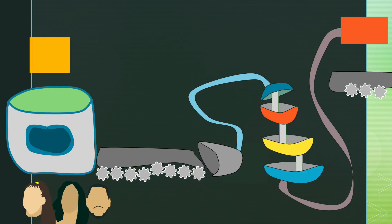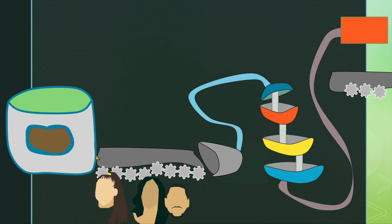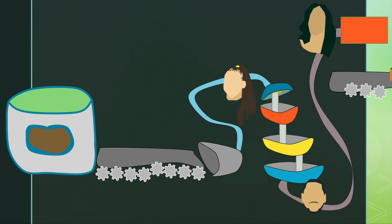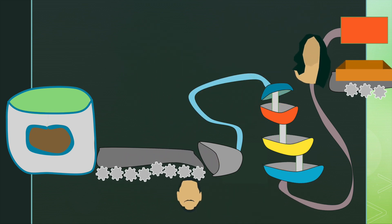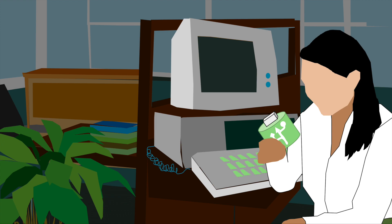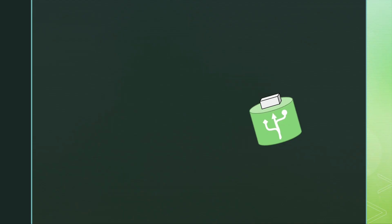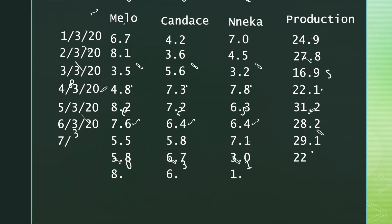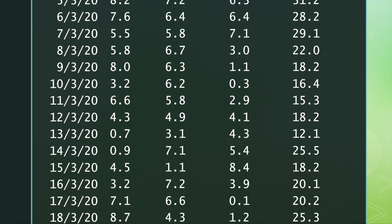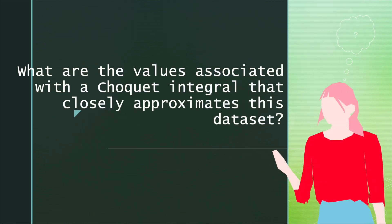Let's assume again that our context is worker production in a factory where everyone starts at 9am and then leaves once their shift is over. This time, we don't actually know how productive each of the workers is, but the factory manager gives us a historical data set showing the shift lengths and total production each day. So from this data, the question is: what are the values associated with the Choquet integral model that closely approximates this data set?